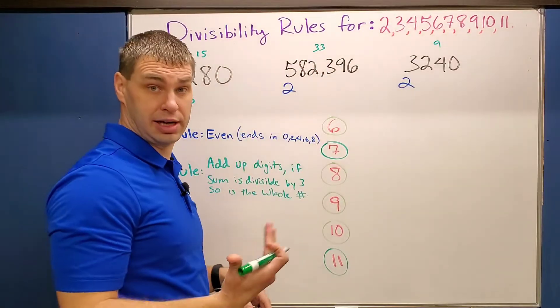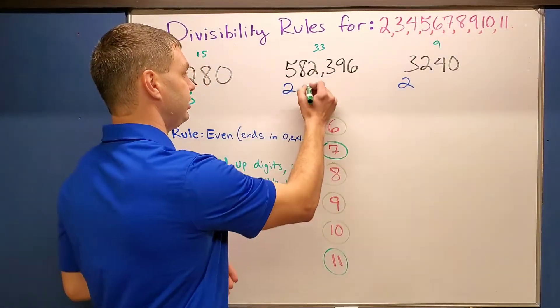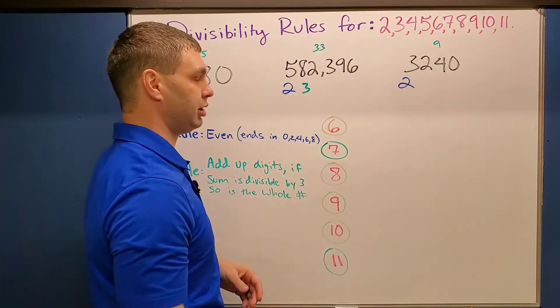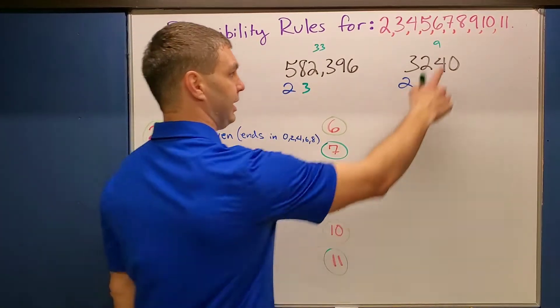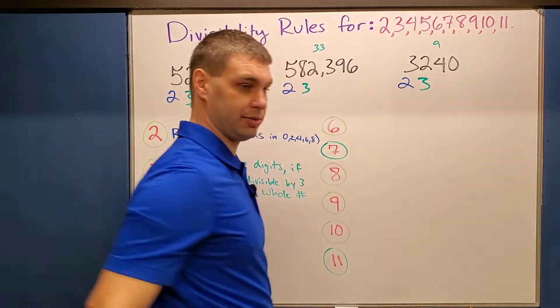33, that's 11. 11 times three is 33, so this would also work for our digit of three. Then lastly, nine is divisible by three.